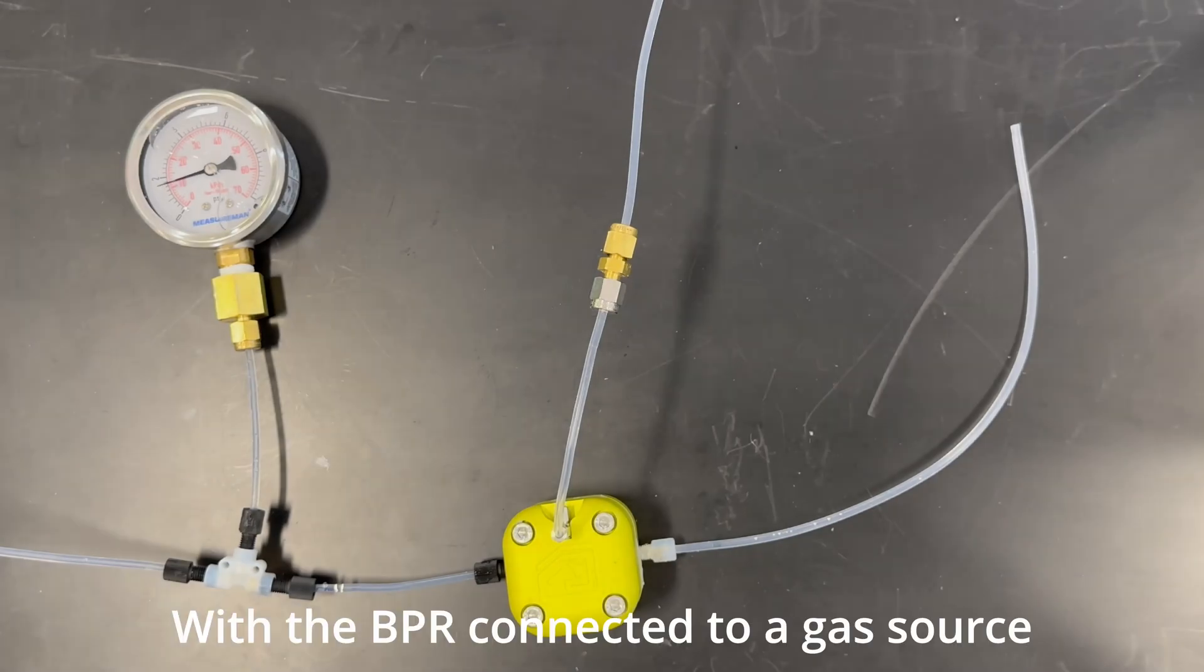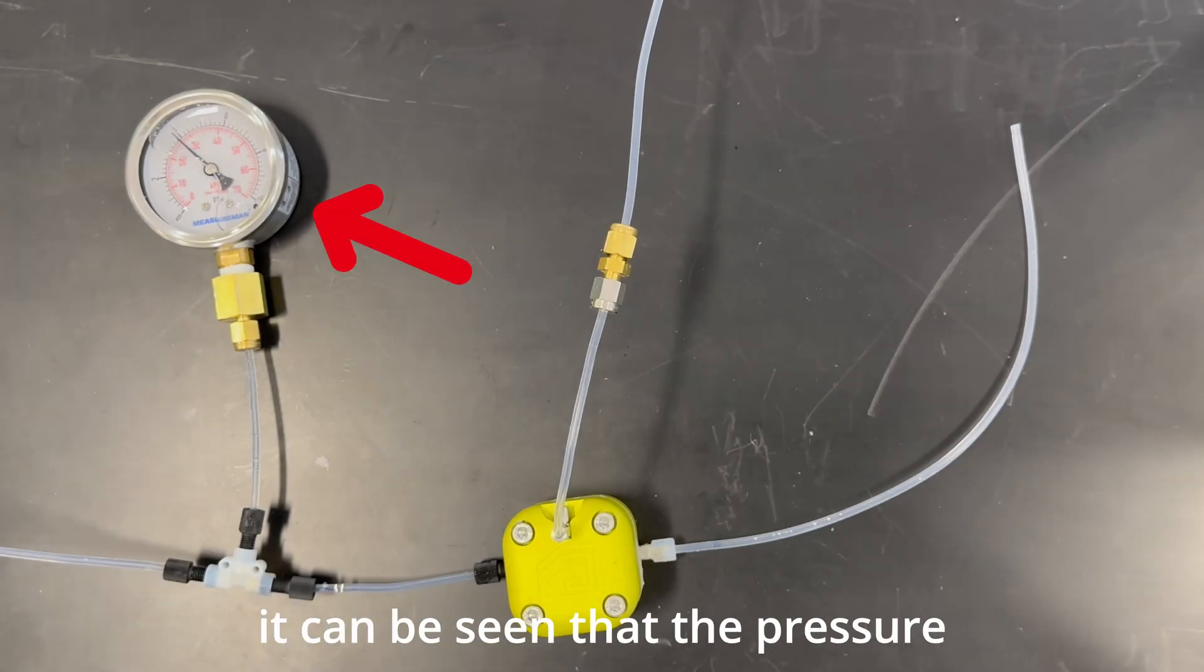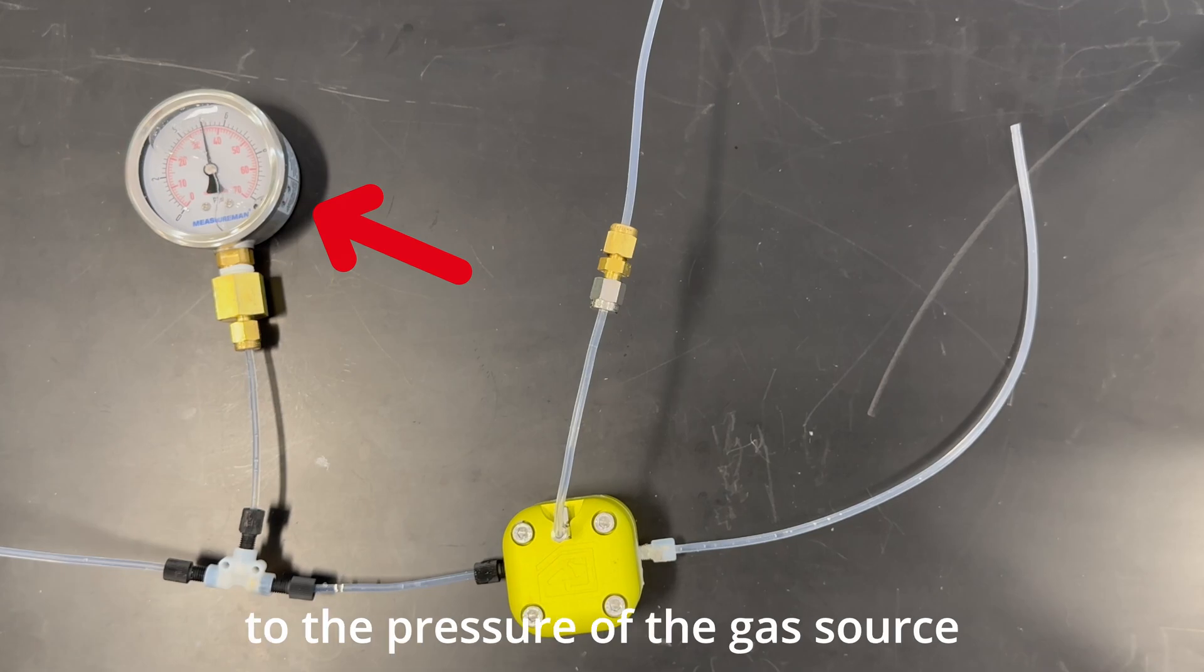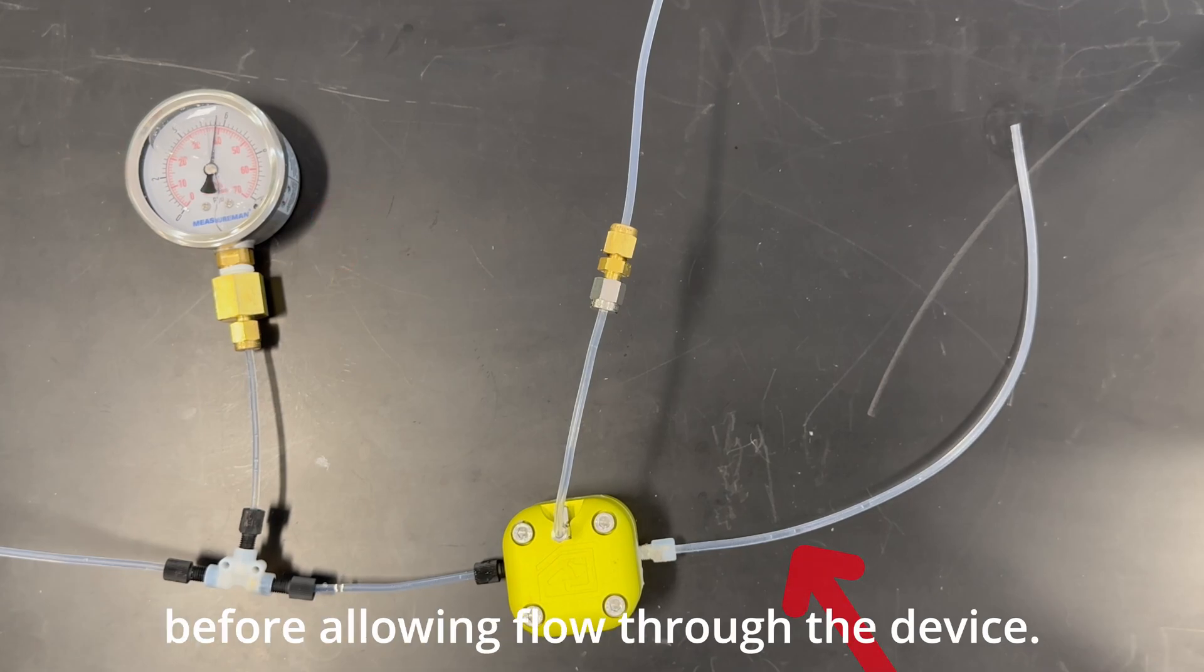The second operating mode we will now be looking at is the continuous setpoint mode. With the BPR connected to a gas source with the pressure valve open, it can be seen that the pressure before the BPR again increases to the pressure of the gas source before allowing flow through the device.